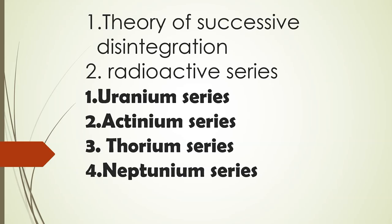This is the concept of the theory of successive disintegration. Now we shall see about the radioactive series. Radioactive series are classified into four groups: they are the uranium series, actinium series, thorium series, and neptunium series.